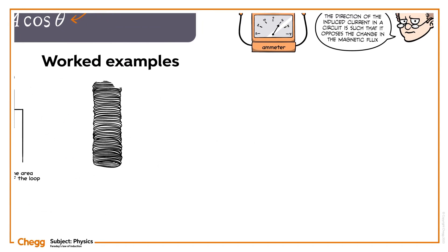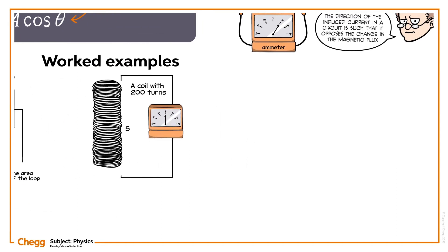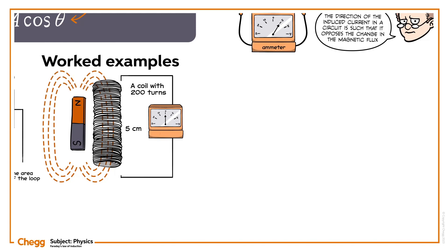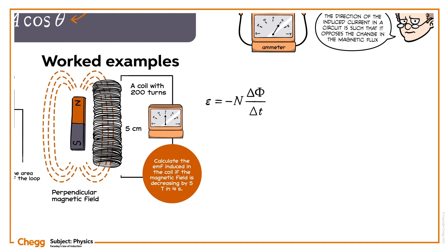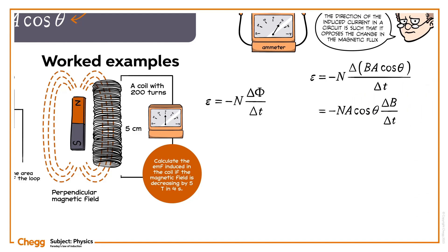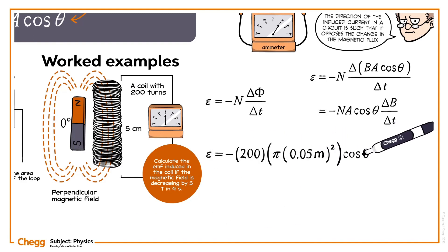Let's take a real-world example. Consider a 200-turn coil of radius 5 cm that is placed in a changing magnetic field, such that the magnetic field is perpendicular to the coil. Calculate the EMF induced in the coil if the magnetic field is decreasing by 5T in 4 seconds. The induced EMF in a coil is found by substituting the flux expression. Since the magnetic field is perpendicular to the loop, the angle between the magnetic field and the normal to the plane of the loop is zero degrees. Substitute the given values and calculate the EMF.